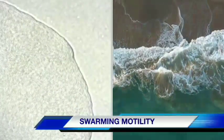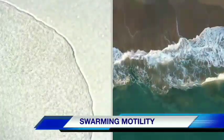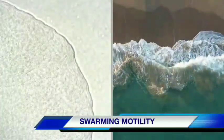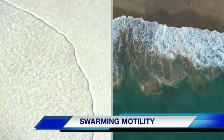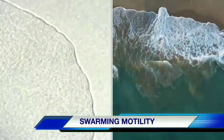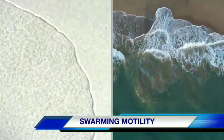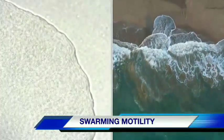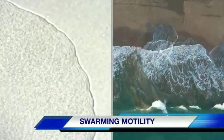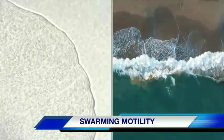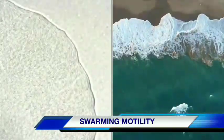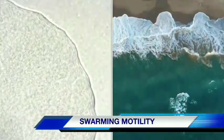Swarming motility. This motility is seen in Proteus mirabilis. It is the development of concentric rings of growth due to multicellular movement of bacteria across the surface, and it is powered by rotating flagella due to colony translocation across the surface.